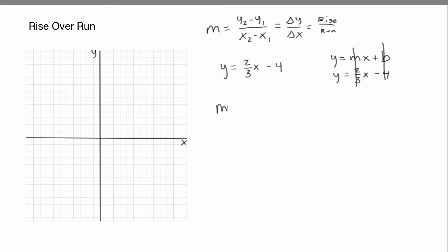So the slope is 2/3 and the y-intercept is negative 4. We represent the y-intercept as a point: (0, negative 4). Where is this point? 0 means you don't go left or right from the origin, and then you go down to negative 4 — right here.